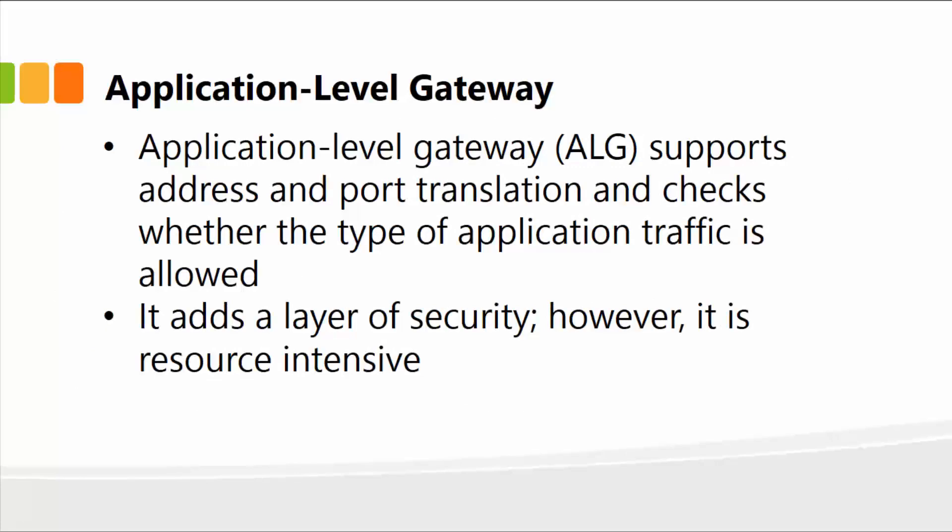The application level gateway supports address and port translation and checks whether the type of application traffic is allowed or not — if it is, it lets it through. This adds another layer of security on top of securing your network by deploying a standard firewall, securing your applications as well. However, be aware that this type of deployment to secure your applications is very resource intensive.